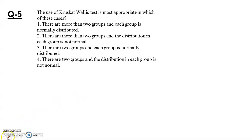The Kruskal-Wallis test is most appropriate in which of these cases? First of all, it is a non-parametric test. Non-parametric tests are applicable when the data is not symmetrically distributed — data is shifted from its normal bell-shaped curve. The Kruskal-Wallis test is used when there are more than two groups and the distribution of each group is not normal. So the answer is option 2.